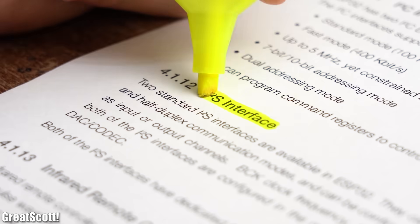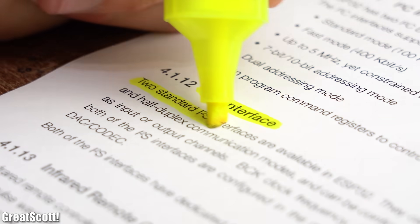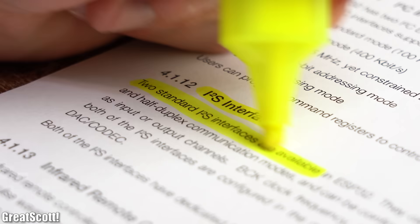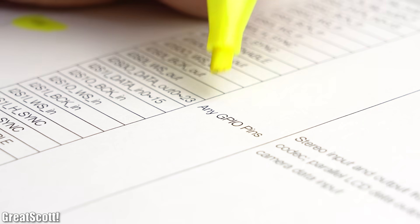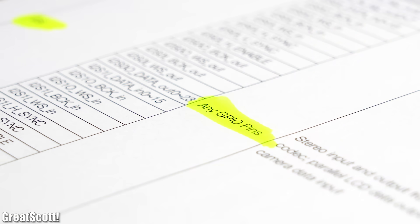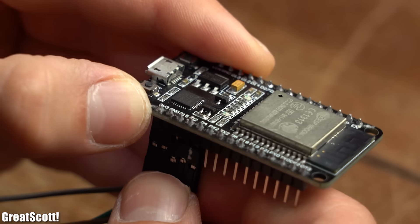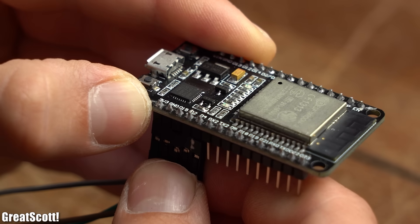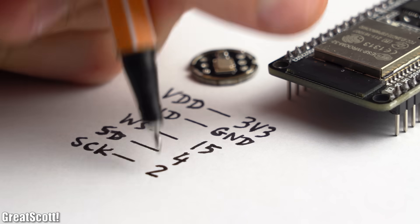As it turns out the ESP32 comes with 2 I2S peripherals but you can select the pins for them by yourself. So I decided on the pins 15, 2 and 4 according to this wiring diagram.